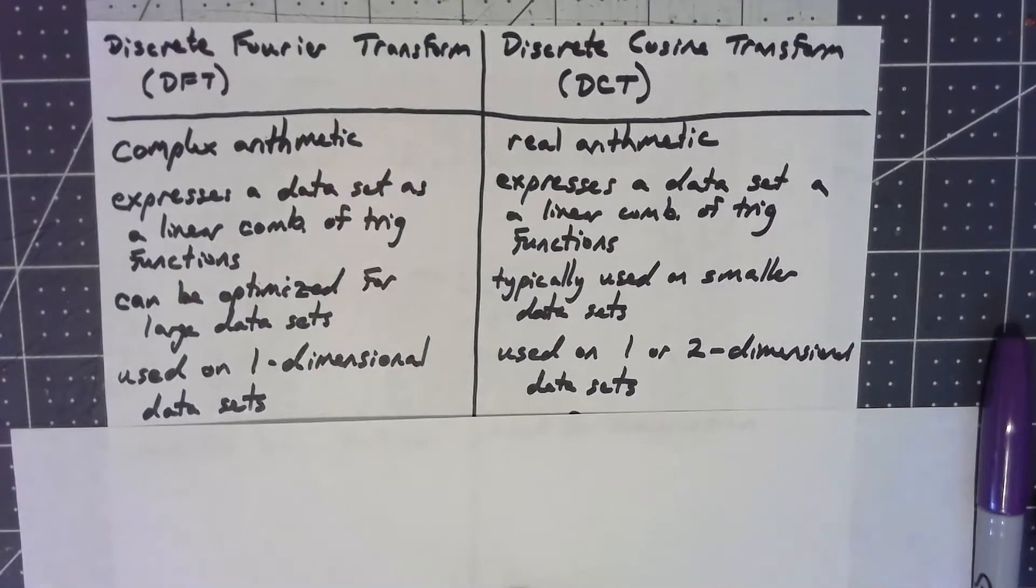If that's the case, that Fourier transform can be made so much more efficient despite the fact that it's using complex arithmetic, why would you ever use the discrete cosine transform? And it's hidden right here. The Fourier transform is used on one-dimensional data sets, whereas the discrete cosine transform, by kind of applying it twice, can be used on matrices as well as just vectors. It can be used on data that occupies a two-dimensional array rather than just a one-dimensional array.